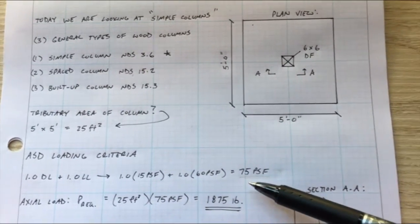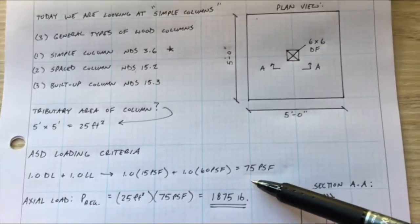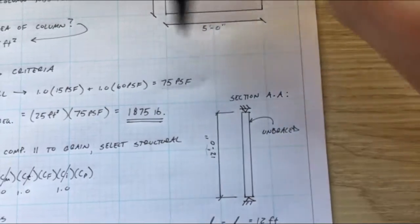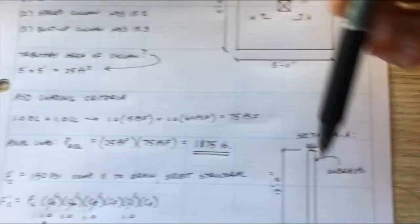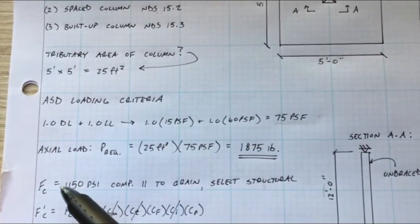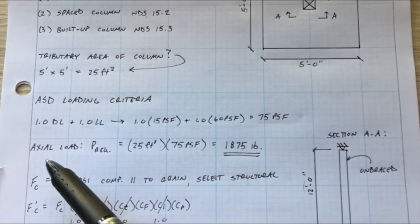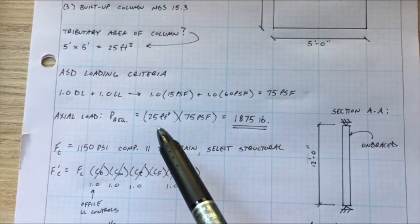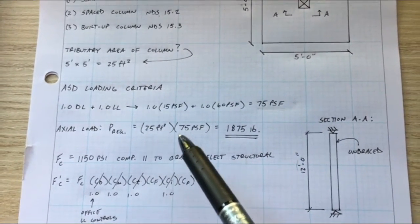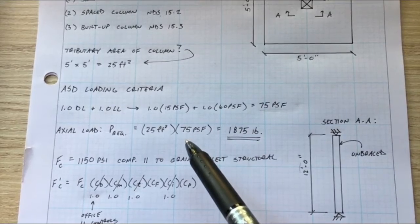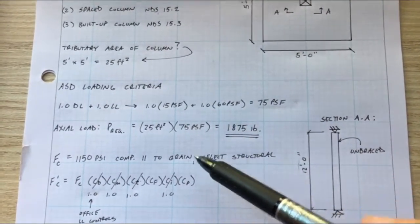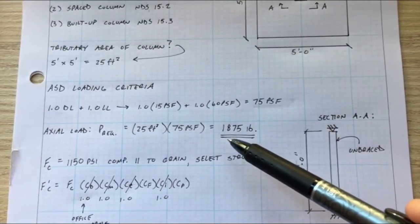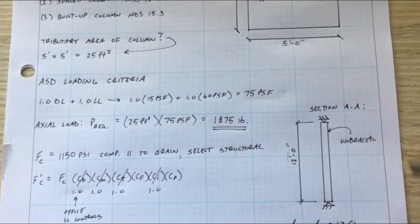We know we have a combined loading of 75 PSF. The axial load, or that load if you look at a section view of this column coming down and loading the column, that's what axial is. That axial load, you can either have tension pulling or compressive forces pushing downward. In our case we have a compressive load on our column. That's just your tributary area associated with the column times your loading criteria force, so distributed force. 75 PSF times 25 square feet gives you 1875 pounds of axial force. So that's our loading criteria defined, that's the demand.